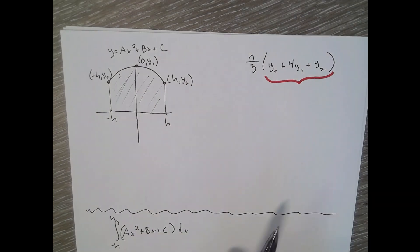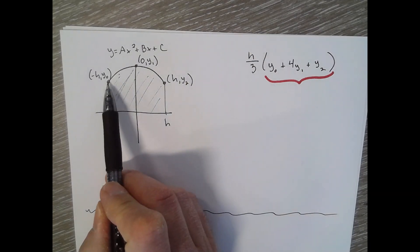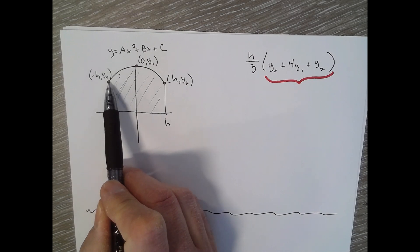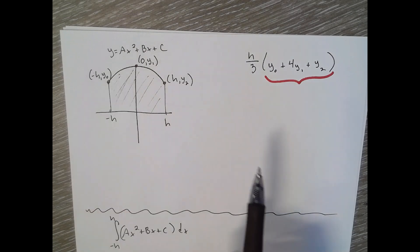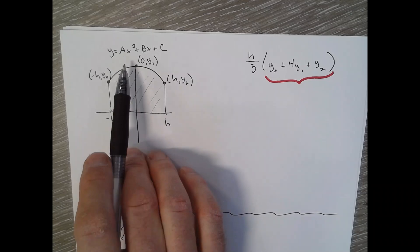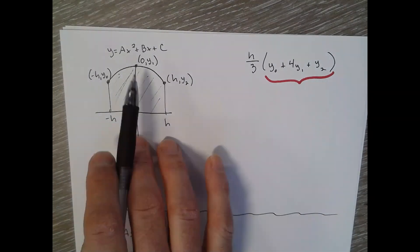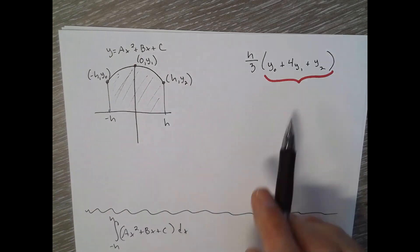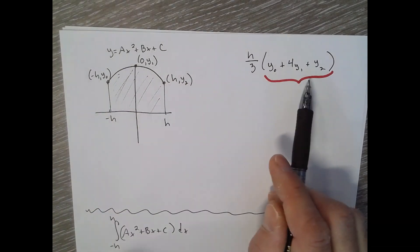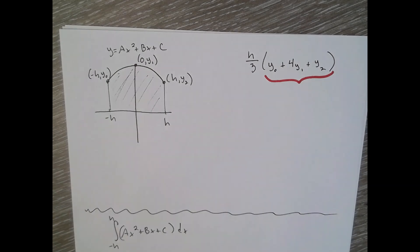Well, your first ordered pair is negative h comma y sub zero. So see what you get when you plug in negative h and zero and h, and then substitute it in here and do some algebra to figure out what that might look like. I'll give you a couple minutes to try that little exercise.